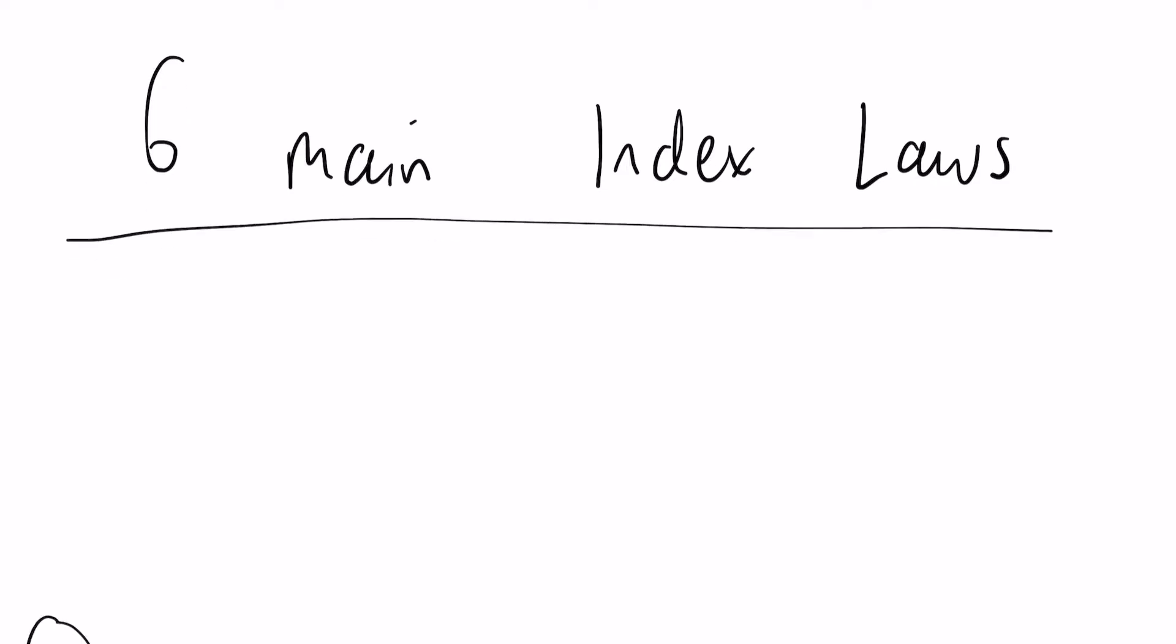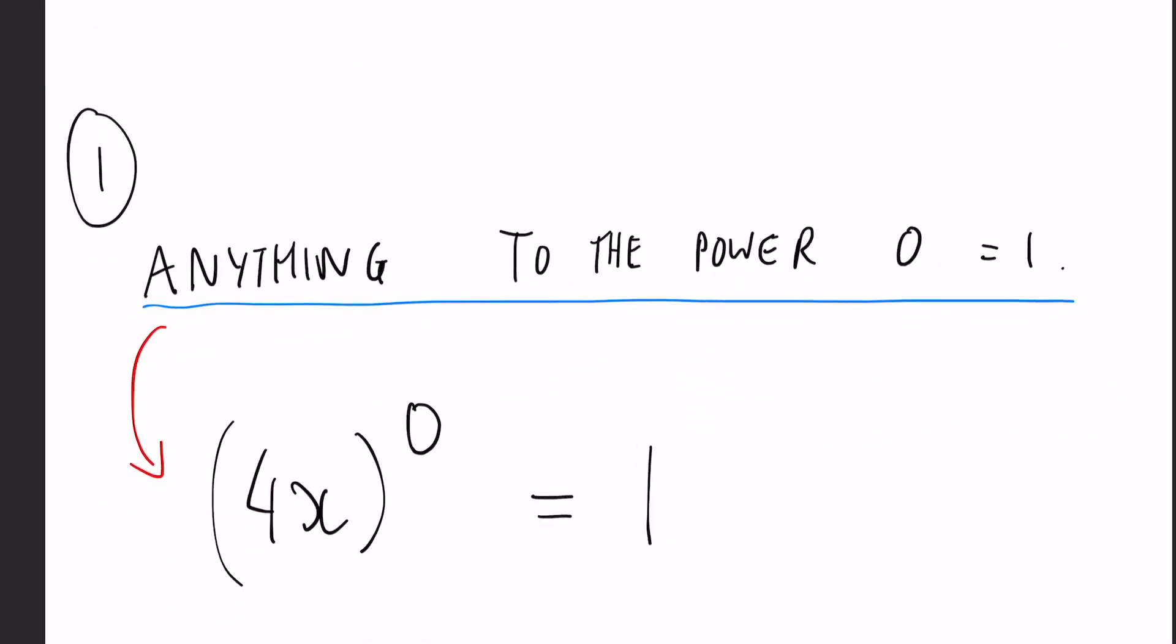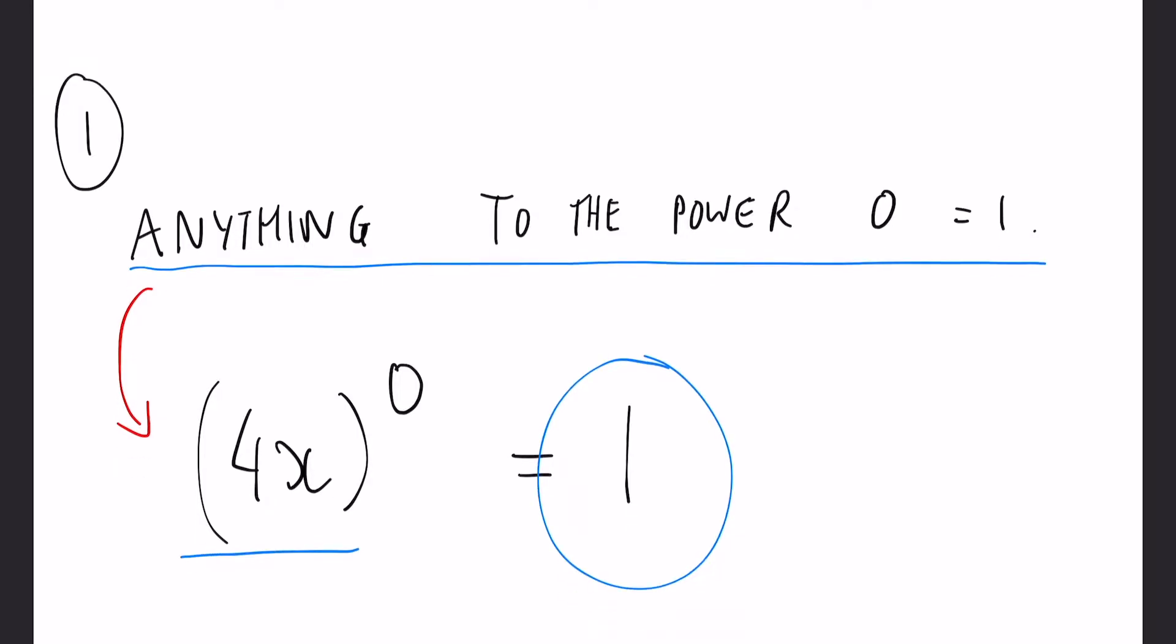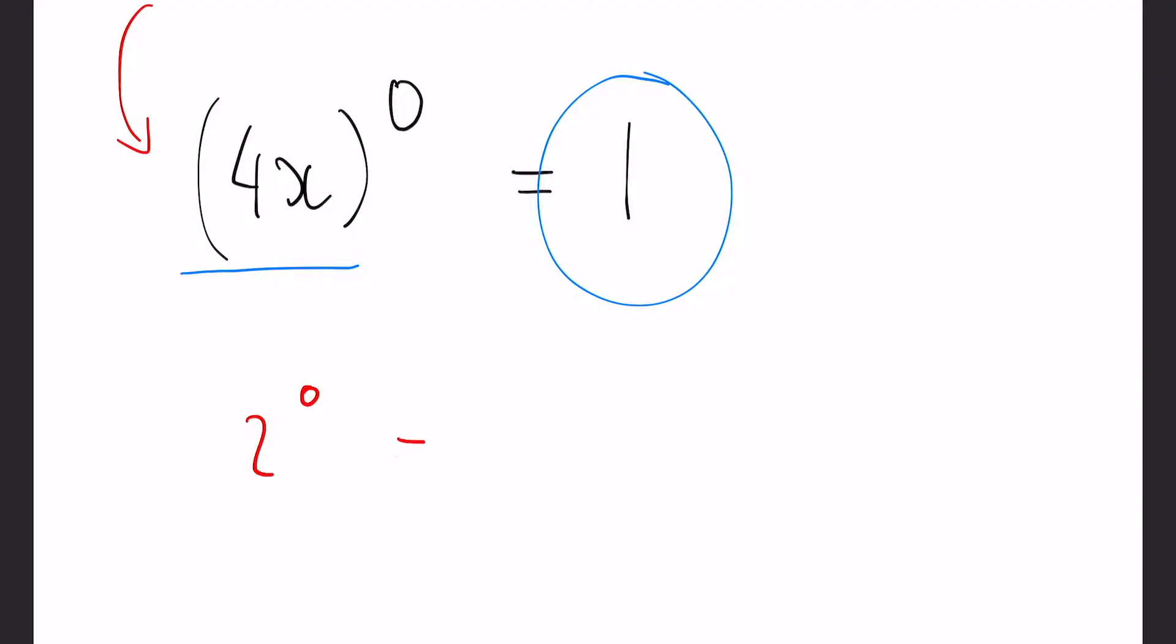So the first rule is a fairly standard one you may have heard of already, but anything to the power of zero is one. So here we see 4x all to the power of zero makes one. That would be the same for example two to the power of zero one, four to the power of zero one, everything will be one.